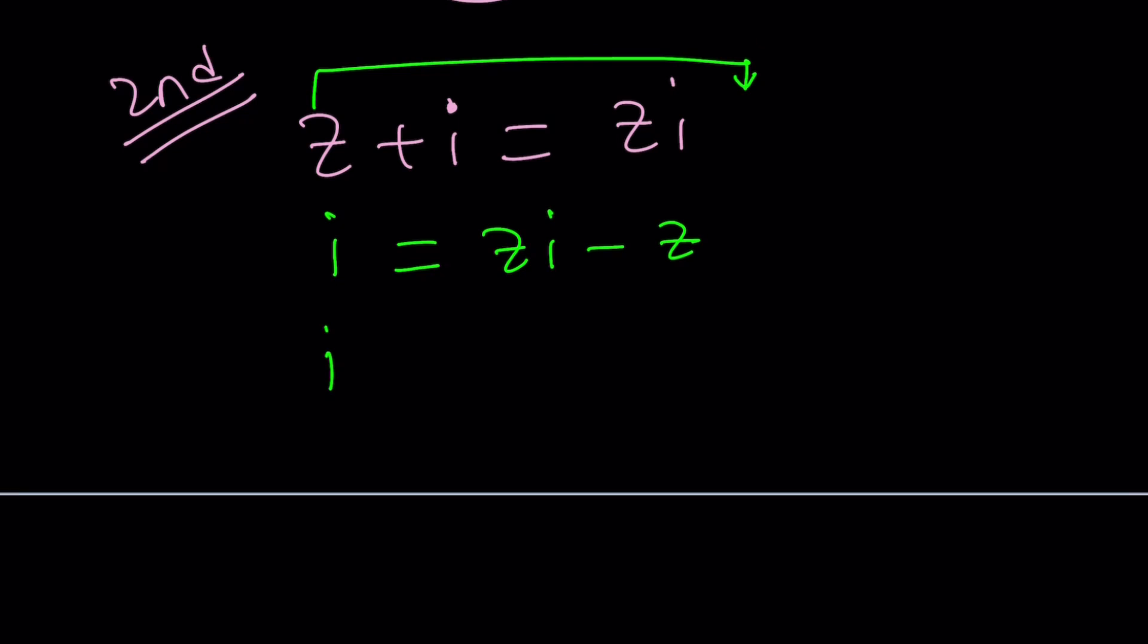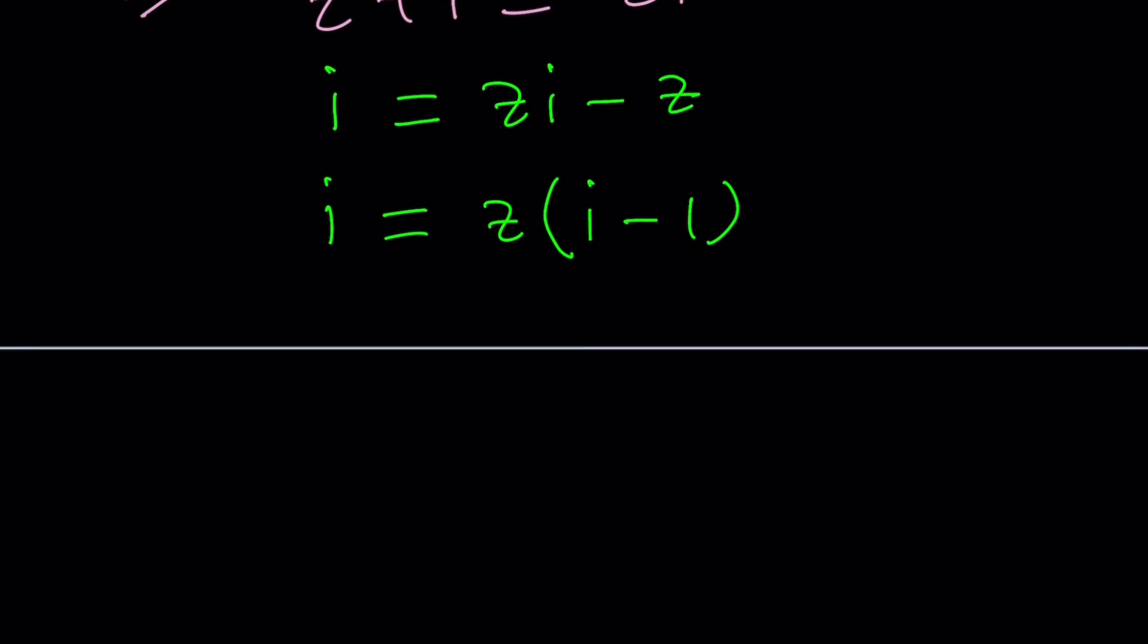And then I can now factor out a Z. I'm putting the Z on the right-hand side, but that's okay. You should get used to it. And then divide both sides by I minus 1 to get the Z by itself. So let's divide by I minus 1. But what is I minus 1? Like, it's not in the standard form. So let's go ahead and switch it around. So let me put the Z on the left-hand side and write this in standard form. How do you write I minus 1 in standard form? You could write it as negative 1 plus positive I. Great.